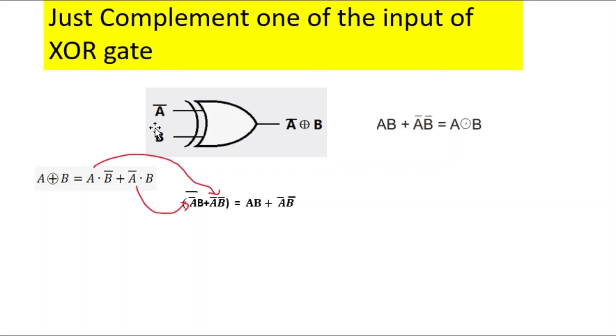So when you complement, suppose you are complementing A̅, so A̅ and this is B, this is XOR gate. So the function will become A̅ XOR B. XOR function is AB̅ + A̅B. So now this A̅ becomes A̅ double bar.